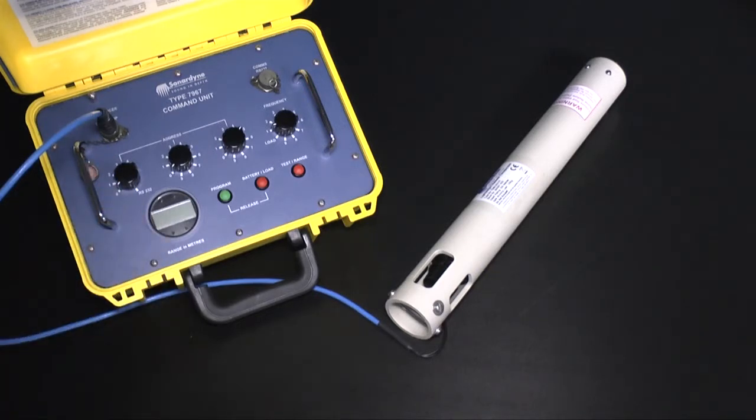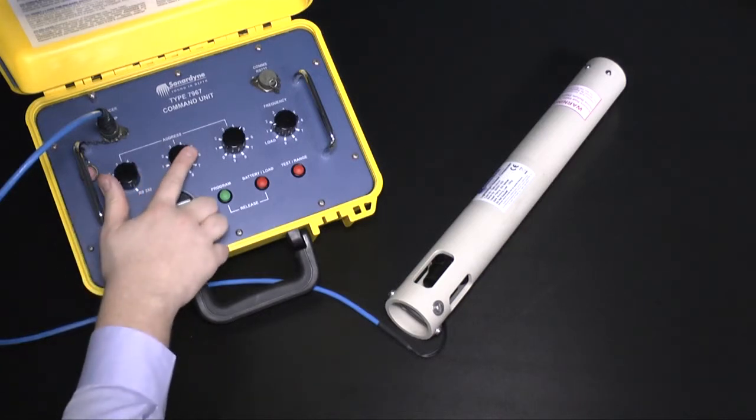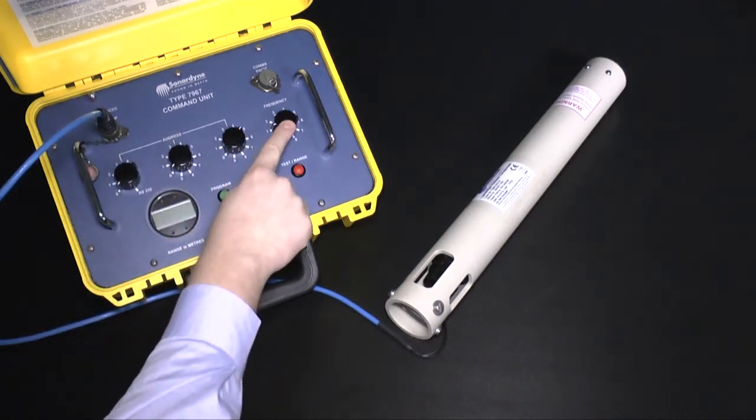Using the rotary dial, select your desired address. In this case I have chosen 005. Next, select the reply frequency. Here I've chosen one.